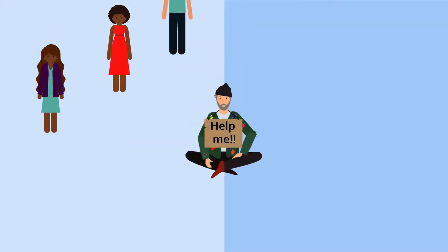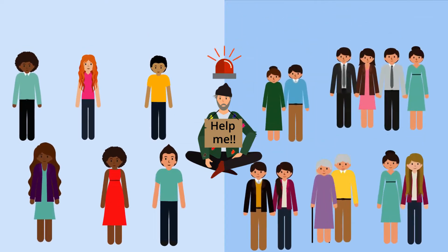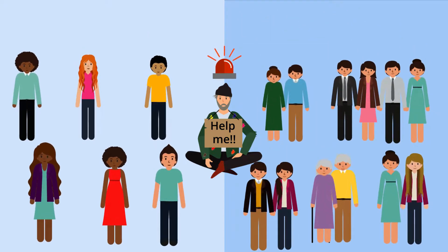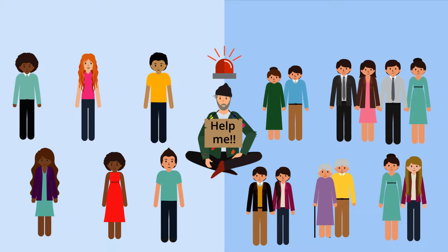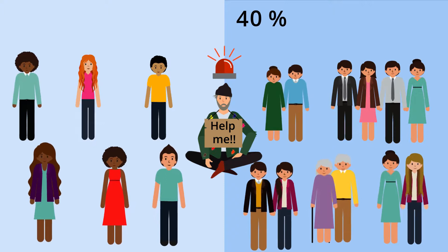In this experiment, the participant is either alone or among a group of people when an emergency takes place. Psychologists measure how long it takes the participants to intervene, if they do. Latané and Rodin found that 70% of the participants called or helped the victim when they were alone. On the other hand, only 40% helped when there were others in the room with them. This is a highly considerable margin.